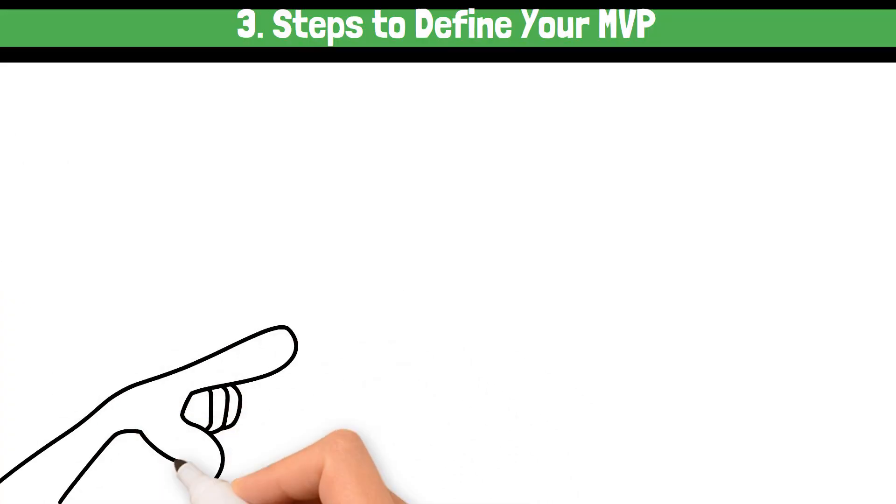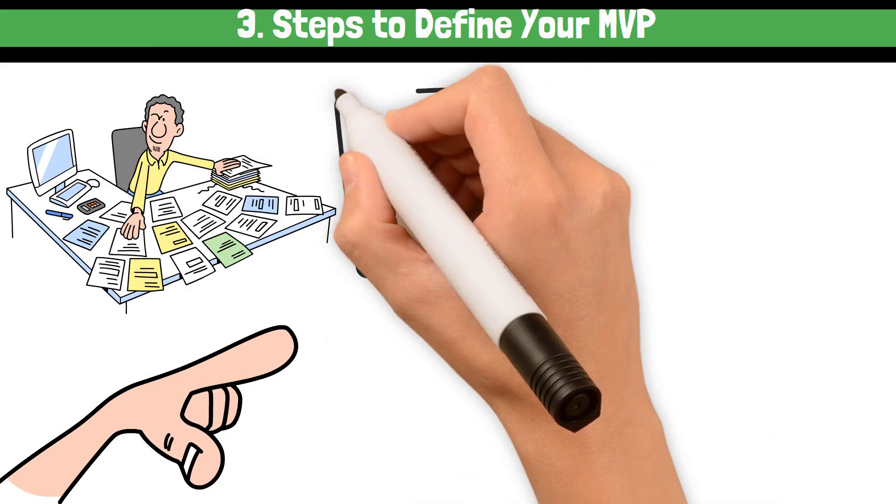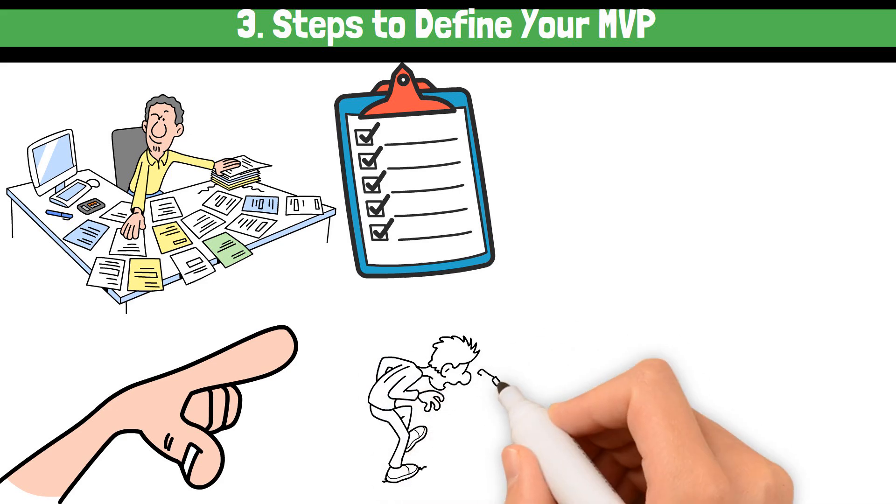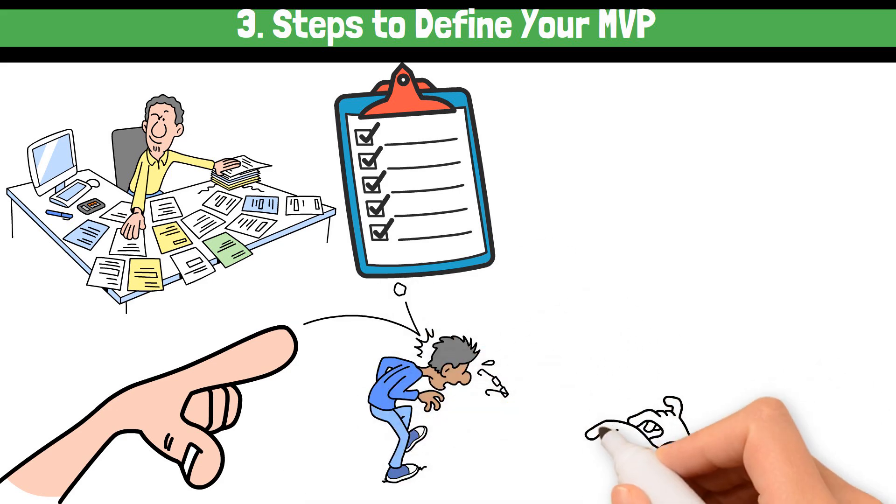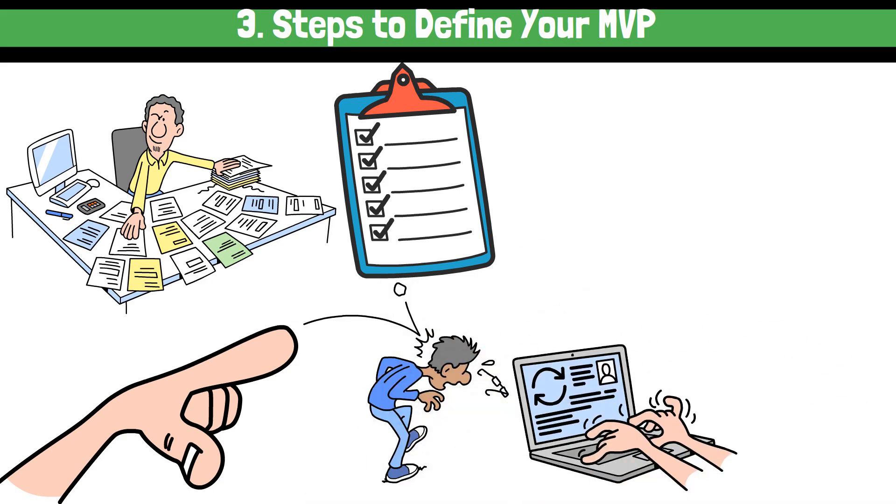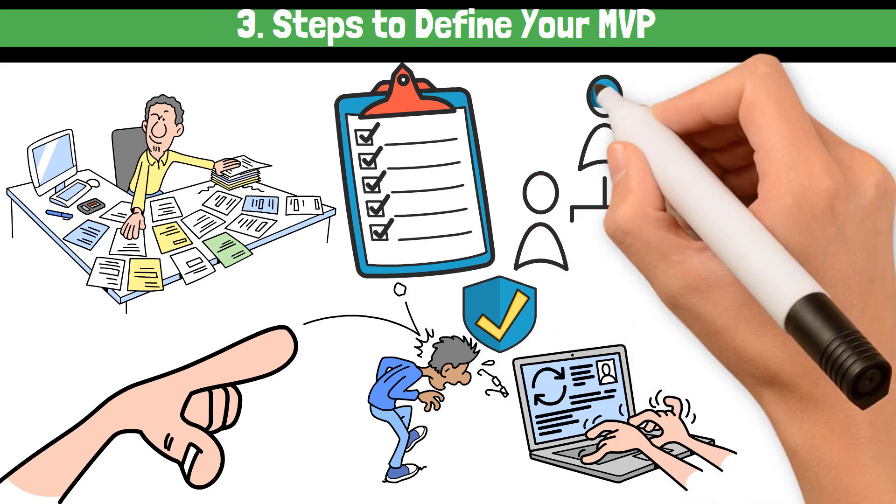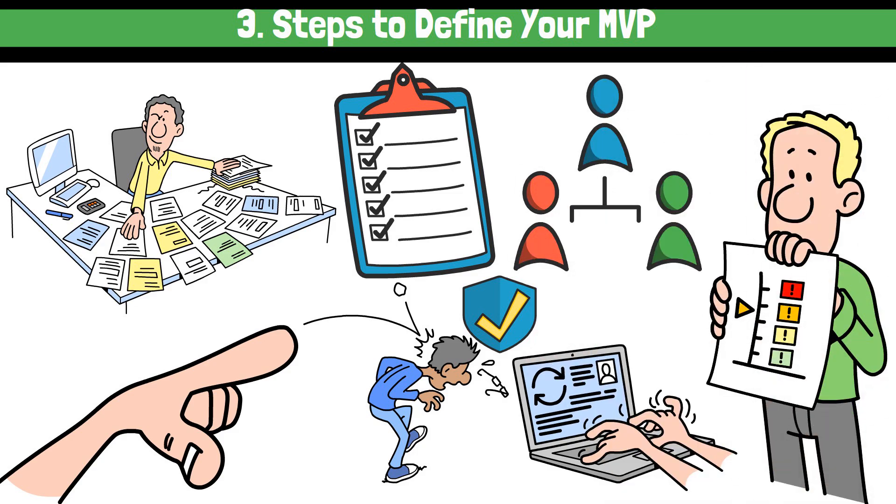Defining an MVP involves three key steps. First, identify the problem you're solving. What's the user pain point? Second, determine your core value proposition. How will your product address this pain? Finally, prioritize features based on what's essential for delivering this value.